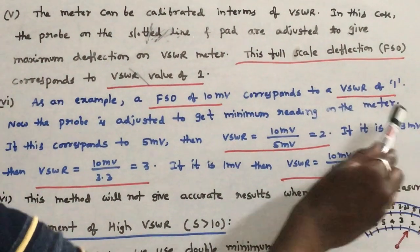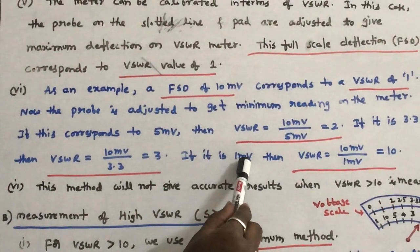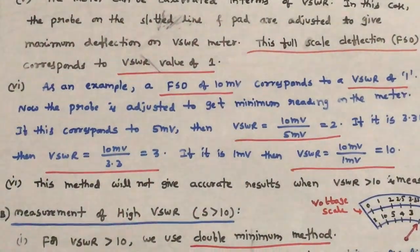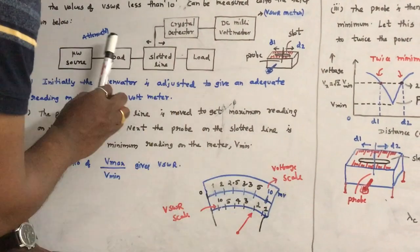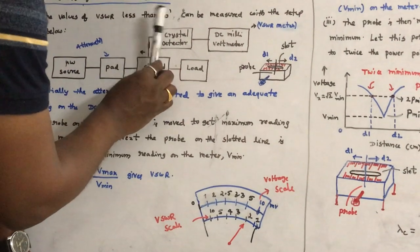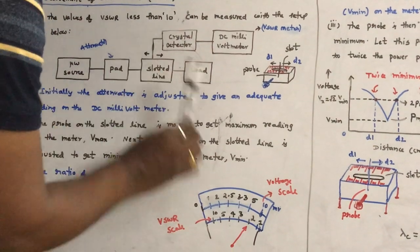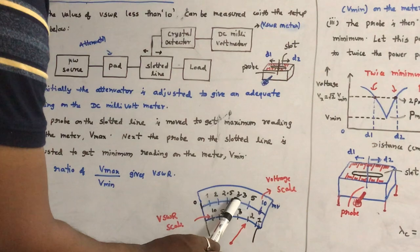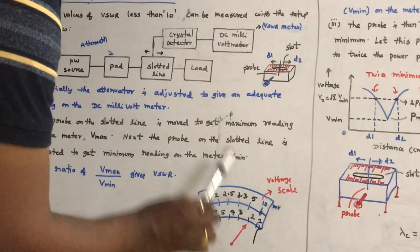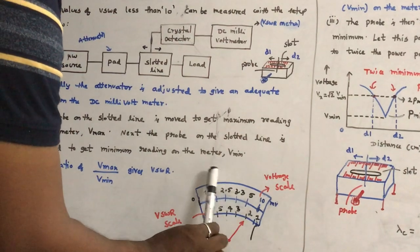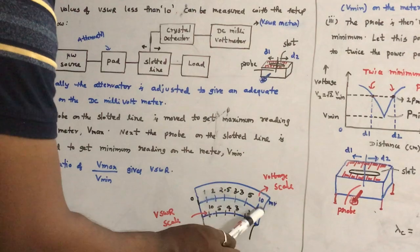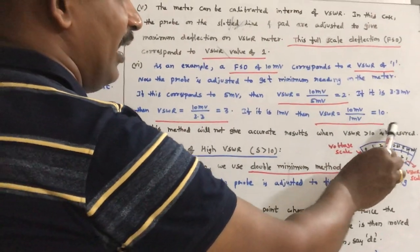Suppose the meter shows 3.3 millivolts, then VSWR value is 3. If the meter shows 1 millivolt, then VSWR = 10 / 1 = 10. First adjust the variable attenuator and slotted line for full scale deflection, then keep the pad fixed and vary the probe until you see V minimum — directly read VSWR from the meter. The VSWR meter is calibrated in both voltage and VSWR. However, this method will not give accurate results when VSWR is greater than 10.